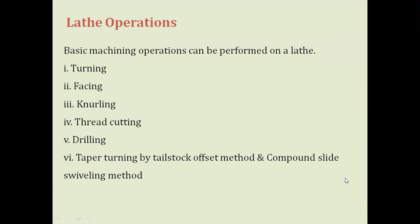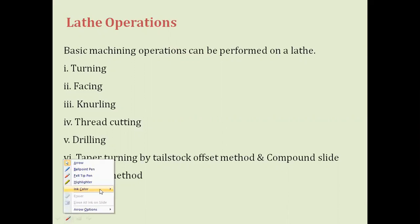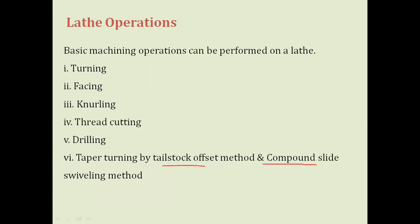In the lathe machine, these are the basic machining operations we are covering: first, turning operation; second, facing operation; third, knurling operation; fourth, thread cutting operation; fifth, drilling operation; and sixth, taper turning by two methods — one is the tailstock offset method, and the other is the compound slide swivel method. We'll discuss these one by one.